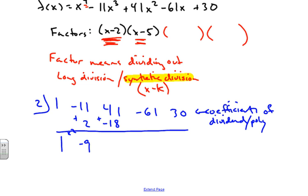Then we're going to have 23, and then we take 23 and we're going to have 46. We add those together and then what we have is -15.